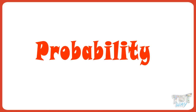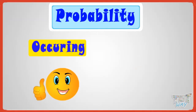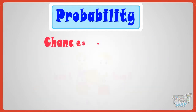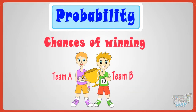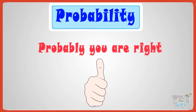So let's get started! The word probability means chance of occurring or not occurring something, and this word is very commonly used in our daily life. Like, chances of teams A and B winning a certain match are equal. Probably it may rain tomorrow. Probably you are right!